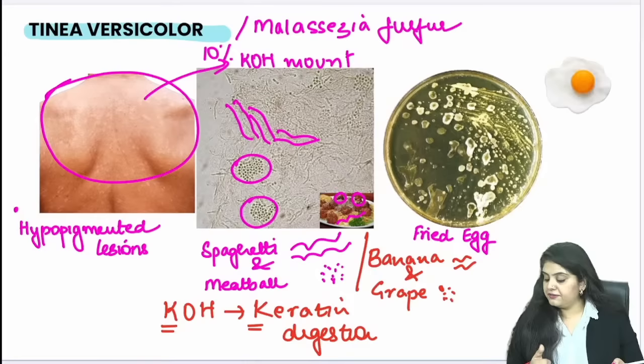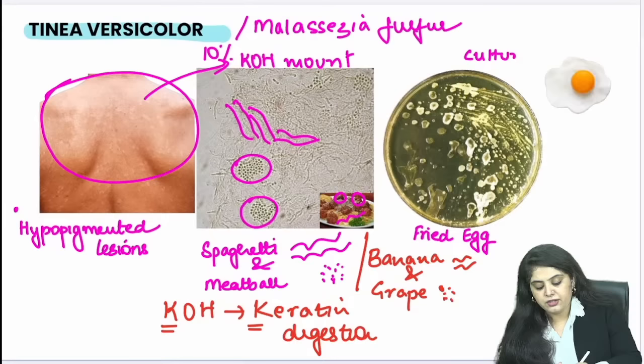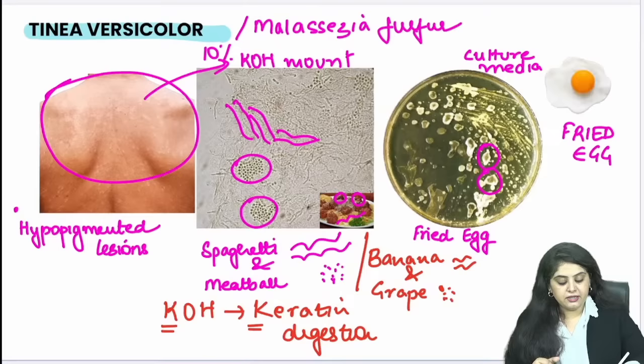If you want to grow Malassezia furfur on culture media, you would look for a specific culture medium. The fried egg appearance on culture media is mentioned, and what is the name of this culture medium? That is the final fill-in-the-blank question left for the session.